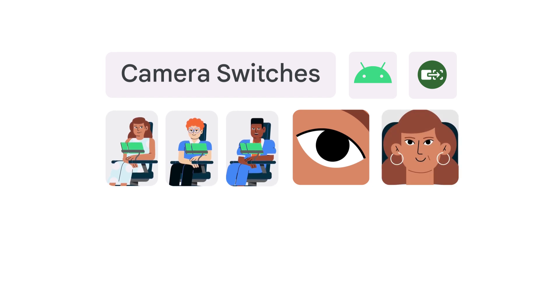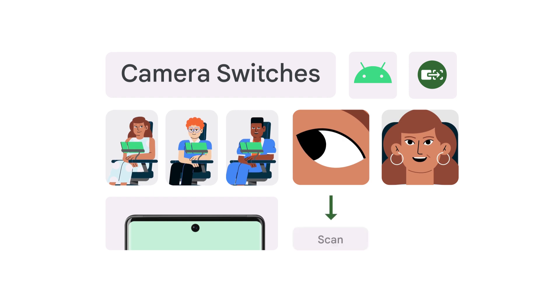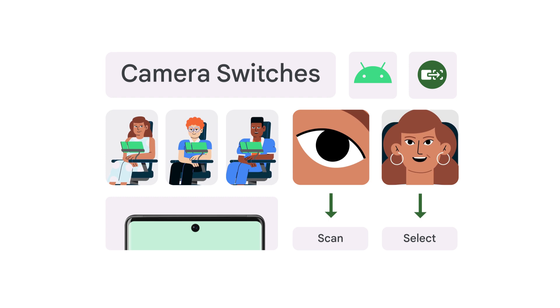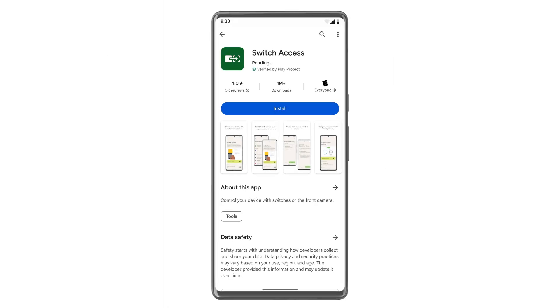It turns the phone's front-facing camera into a switch, so you can choose one movement to scan and another to select. By scanning and selecting using face gestures, you can navigate your phone.